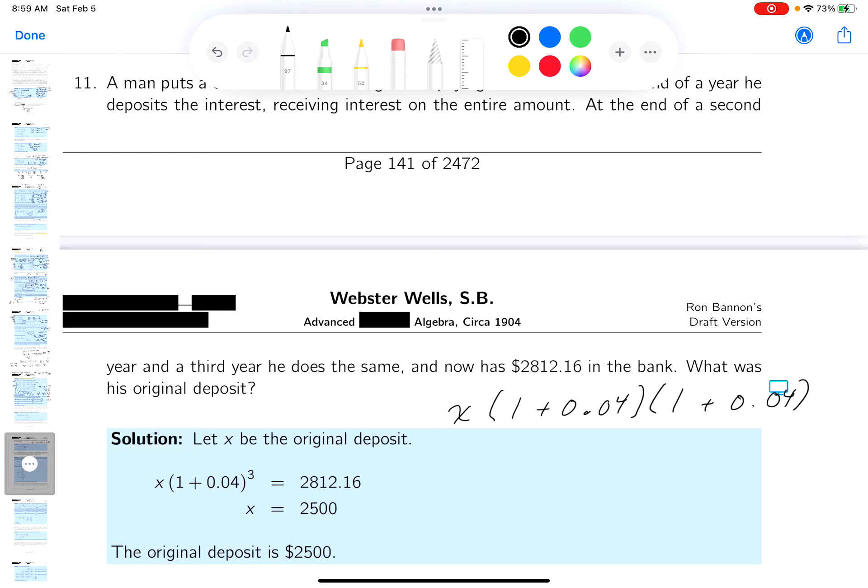Now the third year, I don't want to write down too much, but the third year, what happens, it's happening three times now. So it's going to be 1 plus 0.04, and it'd be three factors of this down. And what is he left off with? Well, 2812.16.